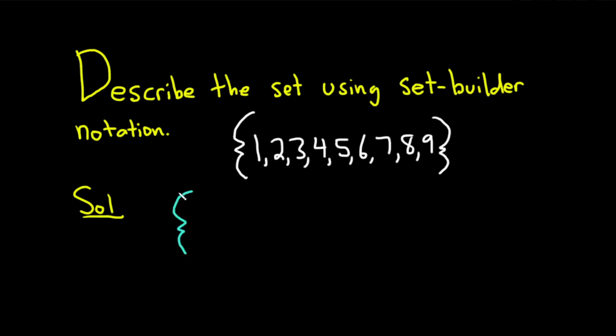So this is read the set of all x such that. So that's how you read this. It's the set of all x such that. And then we have to describe what it means for a number to be in this set.